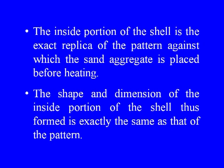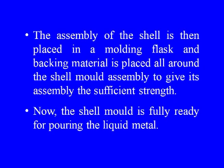The inside portion of the shell is the exact replica of the pattern against which the sand aggregate is placed before heating. If the pattern is of two pieces, then the other half of the shell is also prepared the same way. The two halves of the shell are placed together after inserting the core, if any, to make the assembly of the mold. The assembly is then placed in a molding flask and backing material is placed all around to give sufficient strength. The shell mold is then fully ready for pouring the liquid metal.